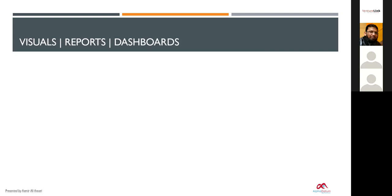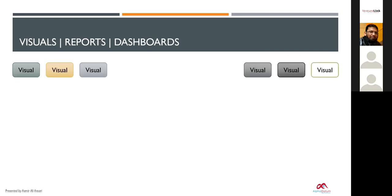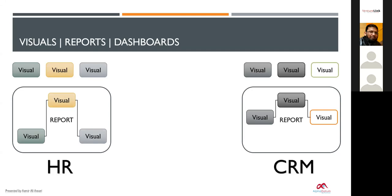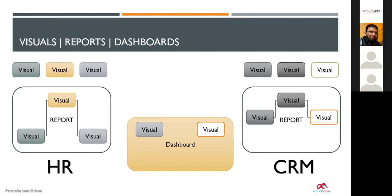To summarize: visuals are independent elements, and you group them together to form a report. For example, one report is for HR and one is for CRM. Both have different visuals telling different data stories. For a dashboard, decision makers can choose certain visuals from each report and consolidate those into a dashboard, giving a consolidated view of the whole organization.